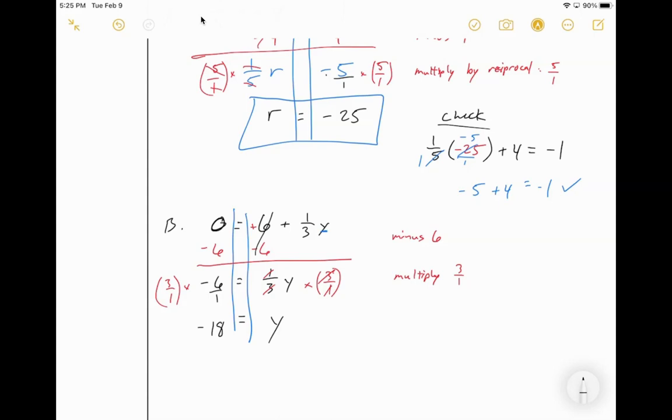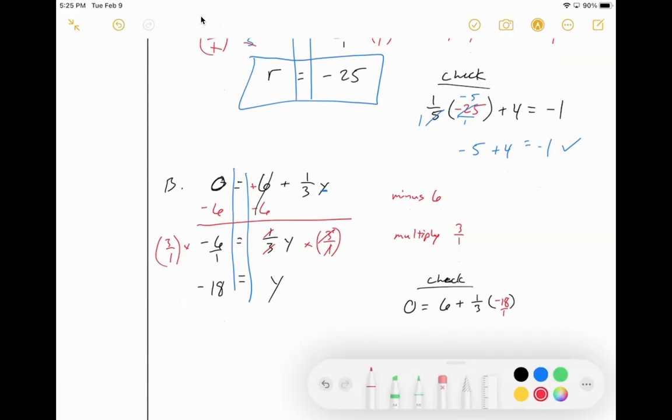Let's go ahead and check it. 0 is equal to 6 plus 1 third times negative 18. Let's go ahead and double check here. That becomes a 1, that becomes a 6, negative 6, that is. So we've got 6 plus negative 6, which, of course, is equal to 0. That checks out for me. And there you go.